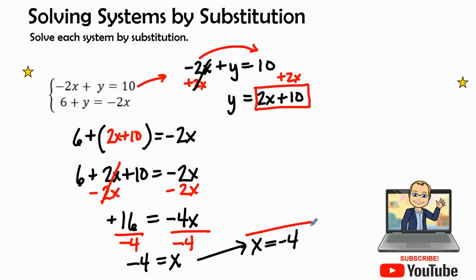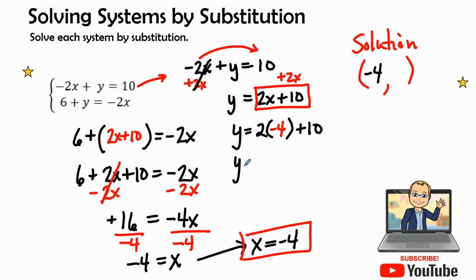So this is my x value in the solution. And now I have to go ahead and find my y value. And to find my y value, I said box to box. So I'm going to plug in a negative 4 wherever I see an x. And so right there by that 2x, I'm going to plug in that negative 4 and then write the rest of the equation.